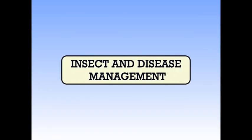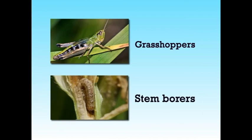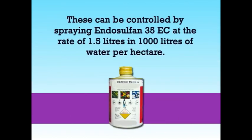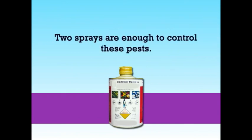The fields should be weeded as early as possible after planting and kept weed-free throughout the growing season, especially during the initial stages while the grass is getting established. 2-3 weedings are required to control the weeds. Weeding may be done either with hand hoe or wheel hoe. Generally, plant protection is not required as the crop is less attacked by pests and diseases. However, the crop may sometimes be attacked by insects like grasshoppers and stem borers. This can be controlled by spraying endosulfan 35 EC at the rate of 1.5 liters in 1,000 liters of water per hectare. Two sprays are enough to control the pests.